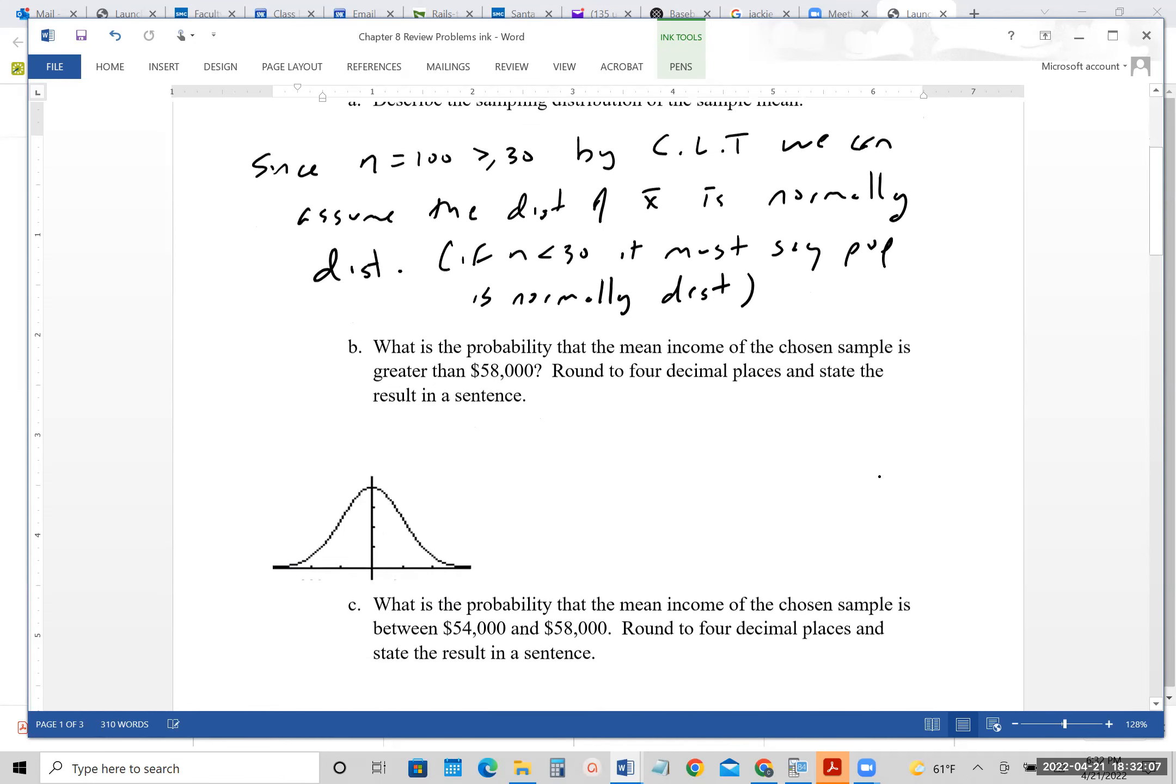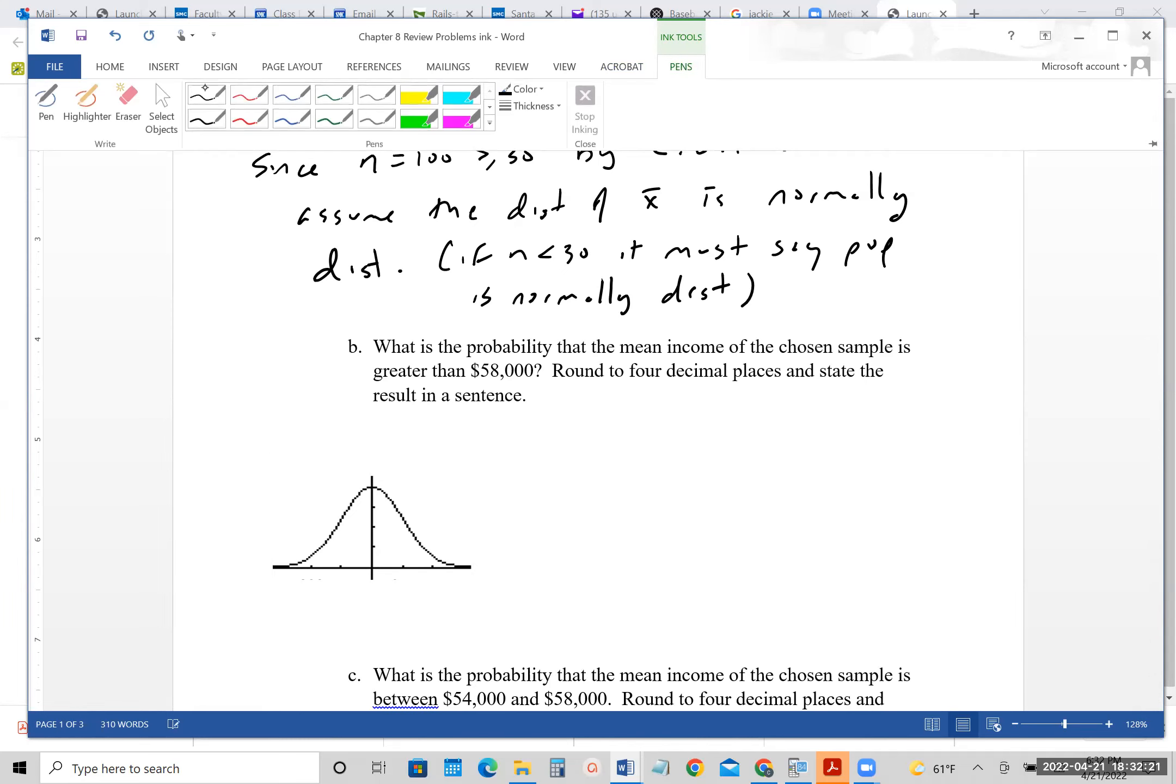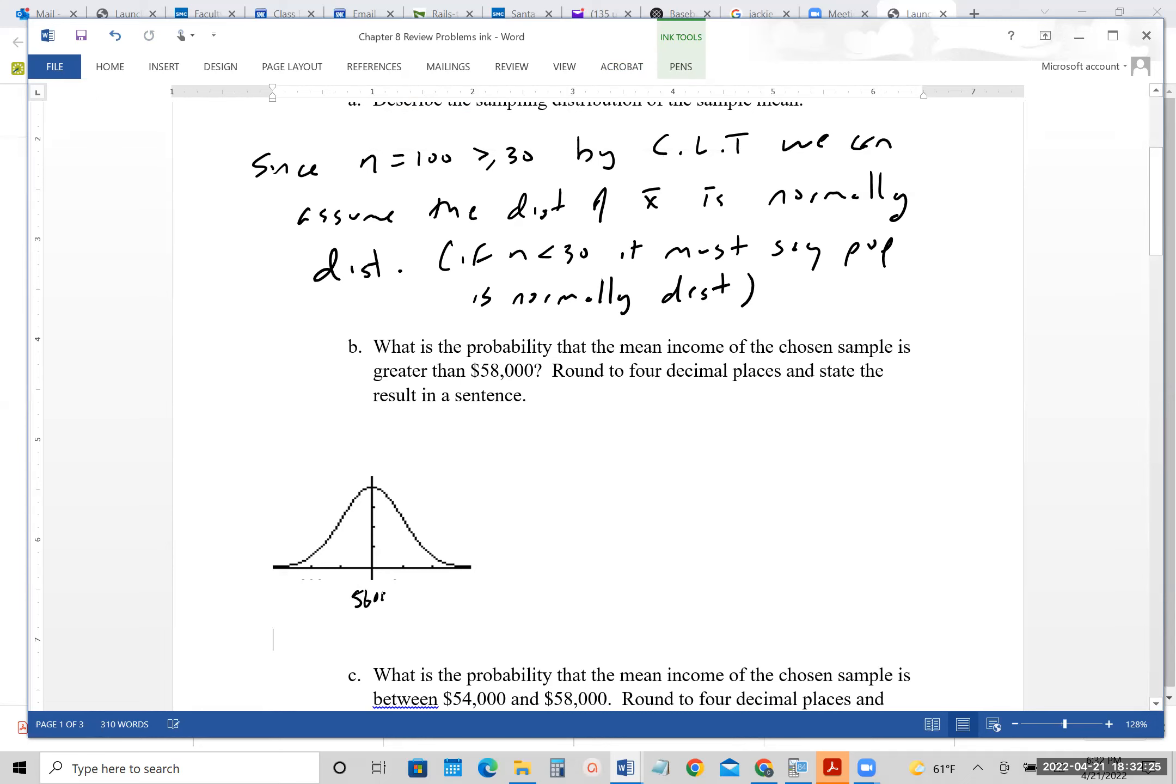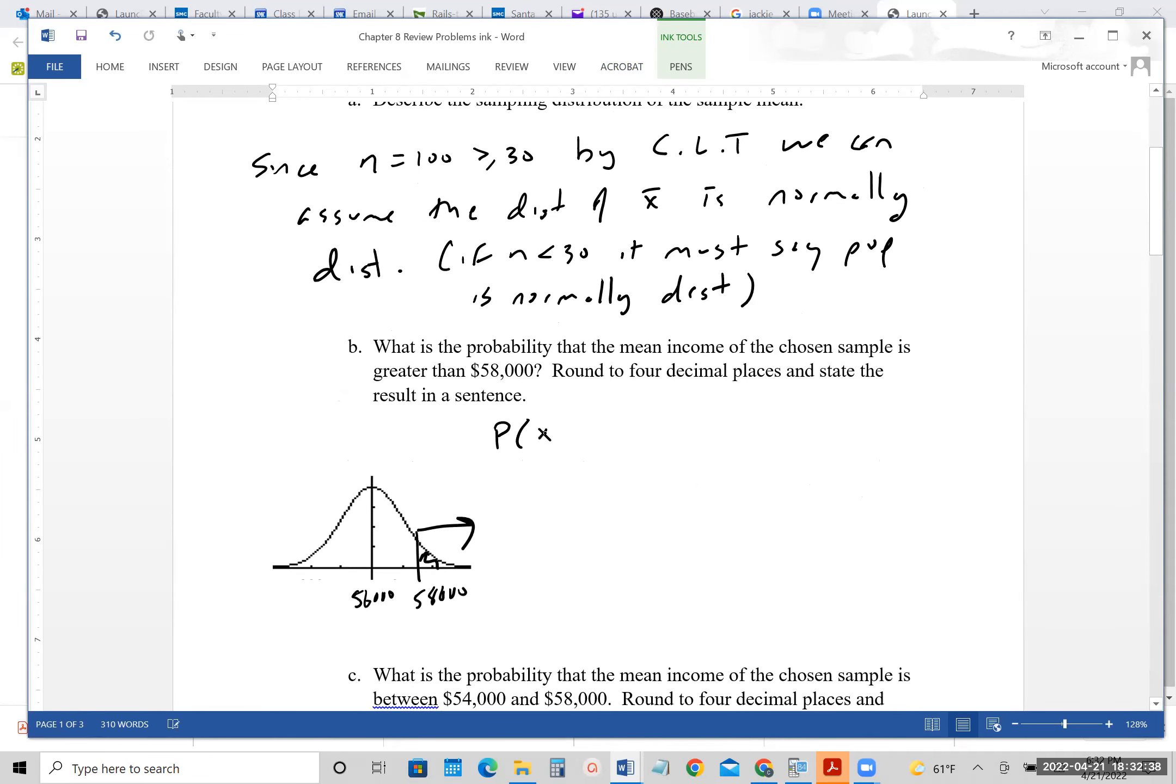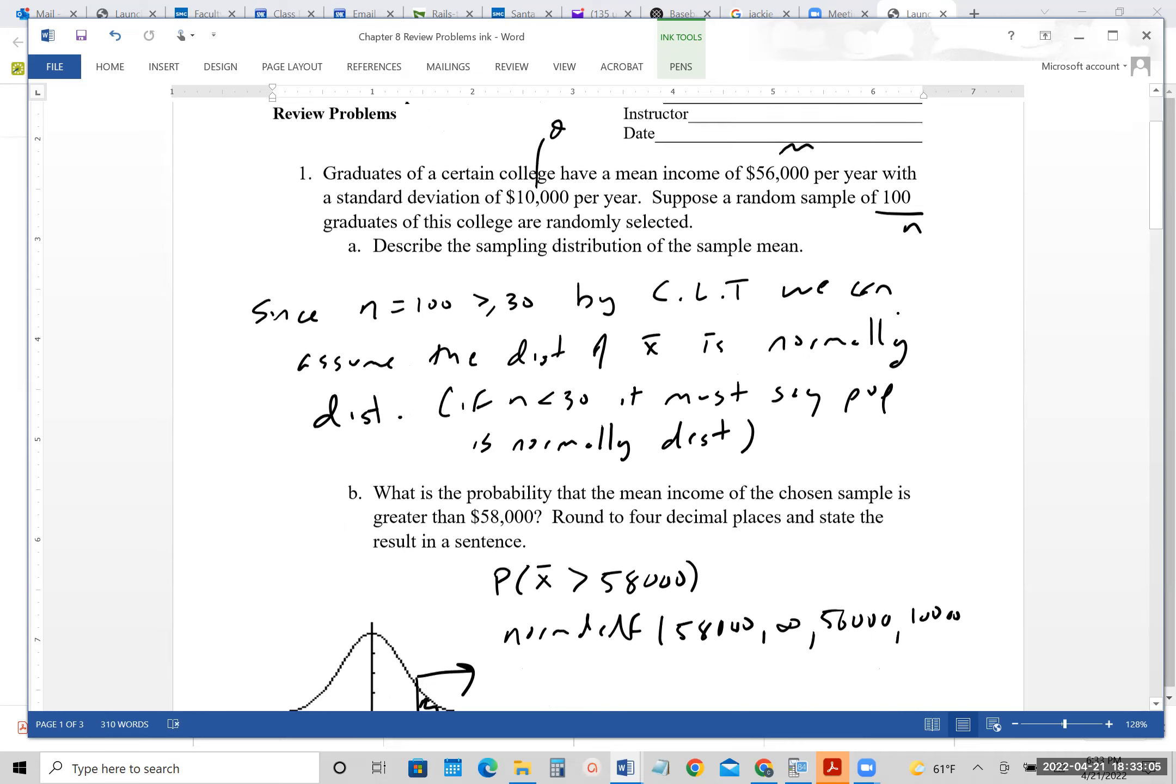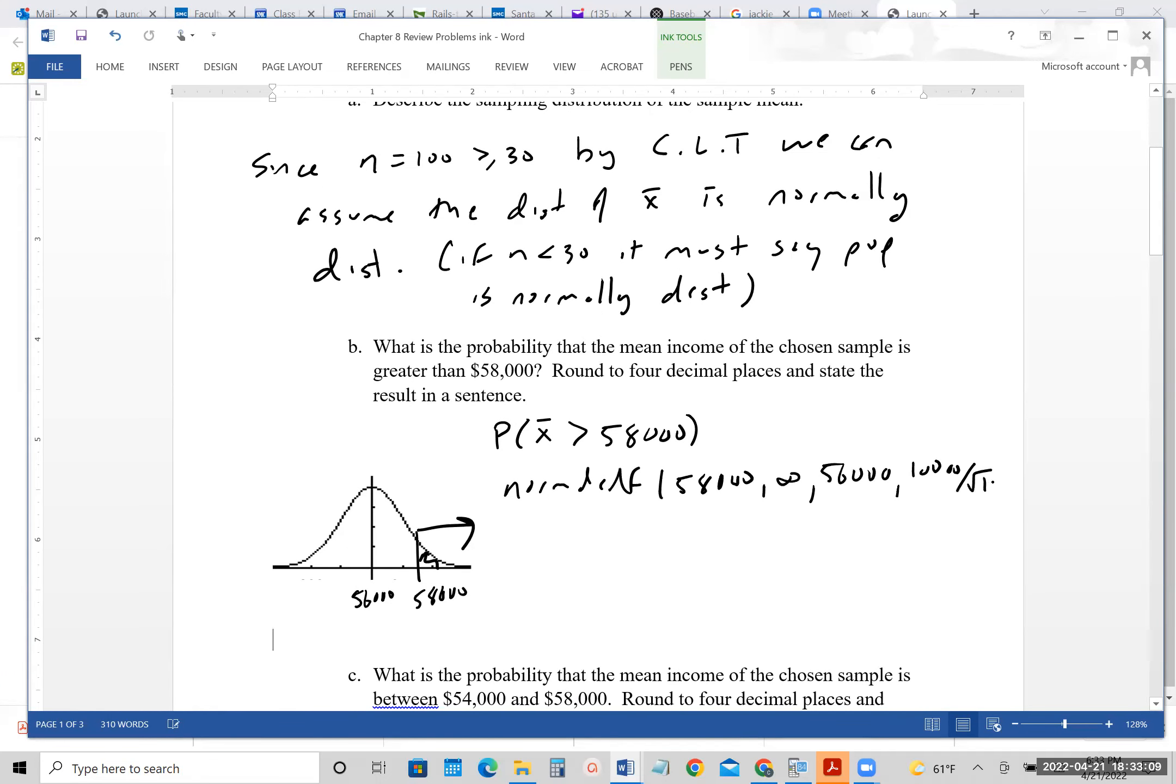Part B says, what is the probability it's greater than $58,000? For that one, let's add to my picture here a little bit. The 56,000 is the center point, so 58,000 will be somewhere over to the right, and we want the area that I just shaded. The probability that x bar is greater than 58,000 is equal to normal CDF 58,000 comma infinity, comma your 56,000 comma 10,000, and we have a sample of 100, so we'll divide by the square root of 100.